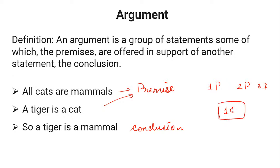An argument is a group of statements from which some are premises and one is a conclusion, and an argument could be either valid or invalid. Remember: an argument could be valid or invalid, but it cannot be true or false. You cannot call it a 'true argument' or 'false argument' — an argument can only be valid or invalid.